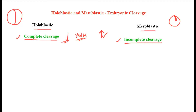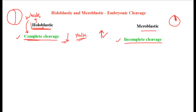So holoblastic is complete and meroblastic is incomplete — logically easy to understand: low yolk means complete, high yolk means incomplete. But how do you remember the terms? When we say holoblastic cleavage, try to rhyme the word with 'hole' or 'hollow.' Hollow means whole — complete! So holoblastic cleavage is a complete cleavage. Remember 'hollow' for 'whole' — complete cleavage. The other one, meroblastic, is then the remaining — incomplete.